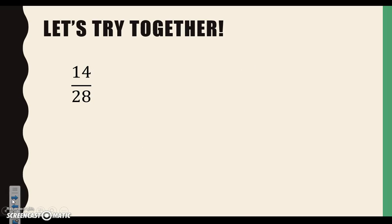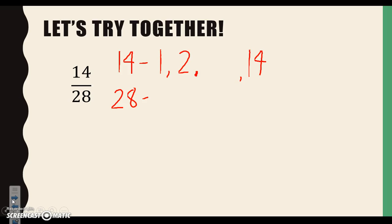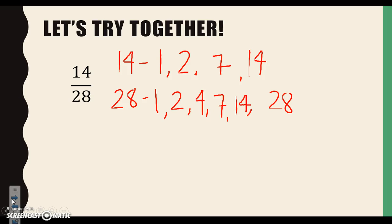Let's try one last one together: 14 twenty-eighths. Again, we're going to list the factors of both 14 and 28 — all the numbers that multiply together to give me the answer I'm looking for. What numbers multiply together to give me 14? We know 1 times 14 will give me 14, and 2 times 7 will give me 14. Let's take a look at 28. We know that 1 times 28 gives me 28, 2 times 14 gives me 28, and 4 times 7 also gives me 28.